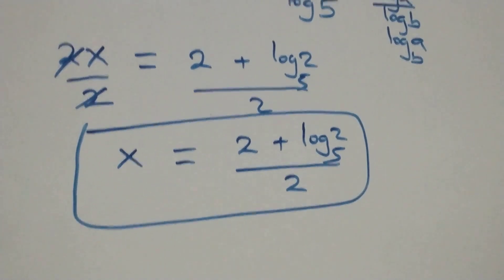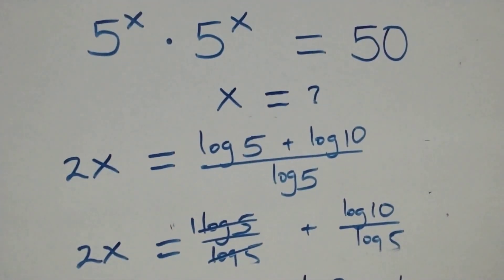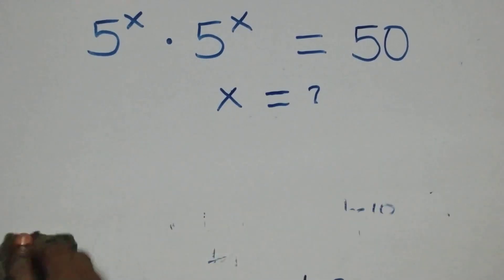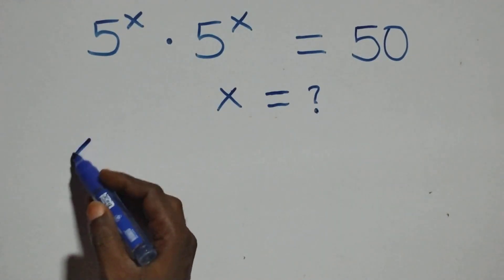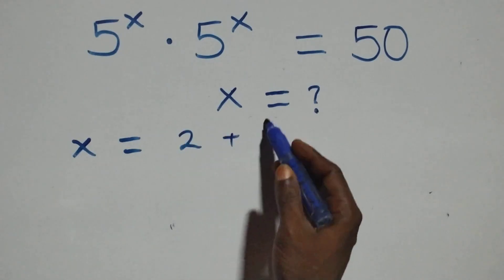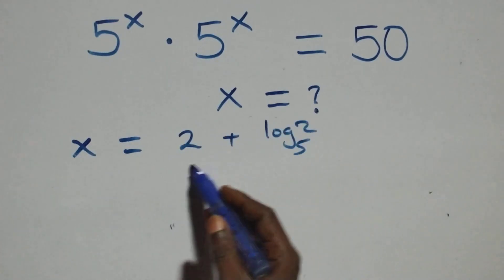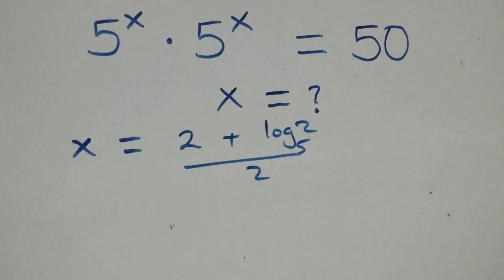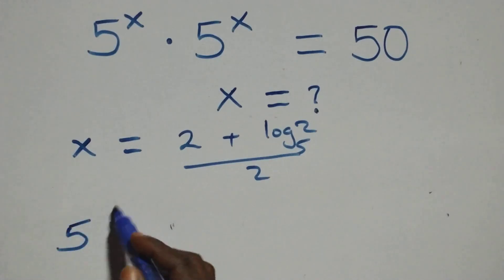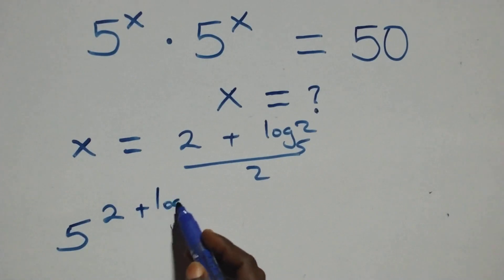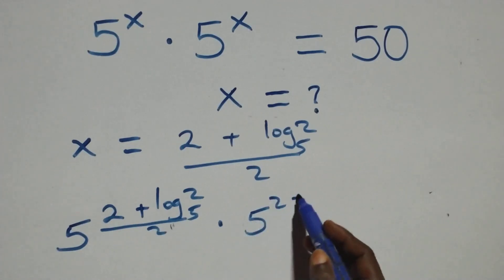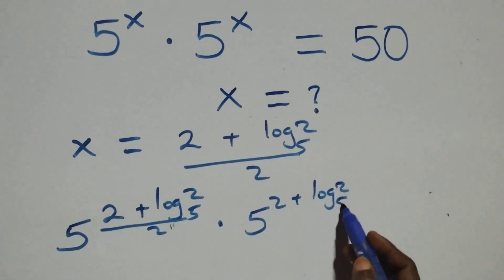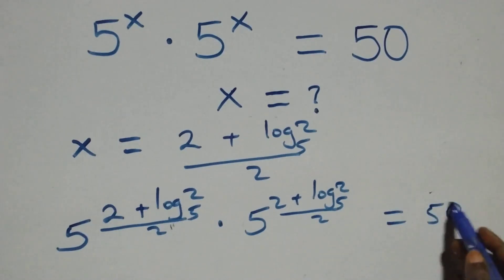If this satisfies the given problem, we substitute the value of x, which is x equals 2 plus log base 5 of 2, all over 2. What we have becomes 5 raised to power (2 plus log base 5 of 2, all over 2) times 5 raised to power (2 plus log base 5 of 2, all over 2). Is this equal to 50 on this side?